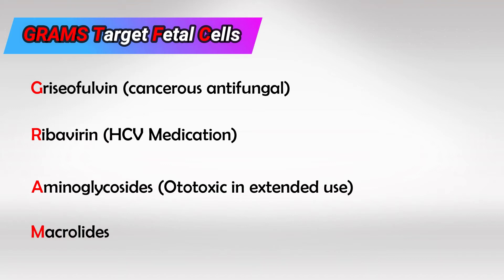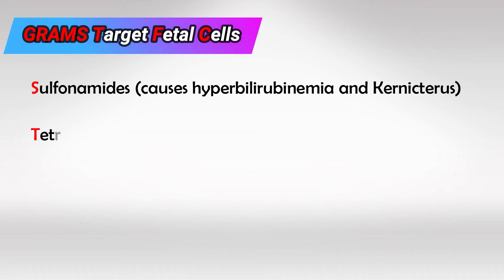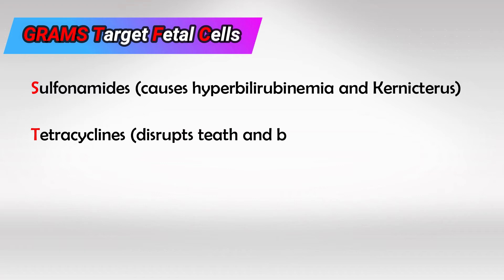clarithromycin. S is for sulfonamides, as they cause hyperbilirubinemia. T is for tetracycline — they target all growing bony tissues, so they cause discoloration of the teeth and bone abnormalities.